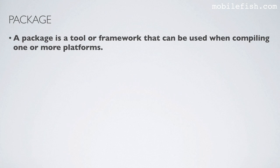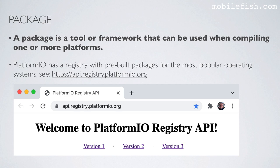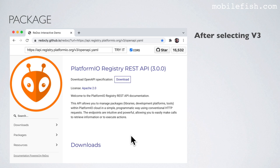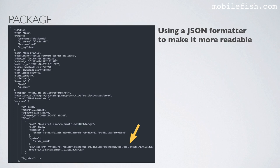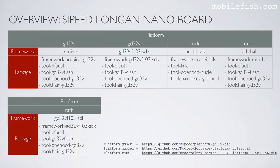A package is a tool or framework that can be used when compiling one or more platforms. Platform.io has a registry with pre-built packages for the most popular operating systems — see the Platform.io registry website. Earlier I mentioned the package tool-dfu-util. If you visit its link you will see its information in JSON format. Using a JSON formatter makes it more readable, and you can see the download location for tool-dfu-util.